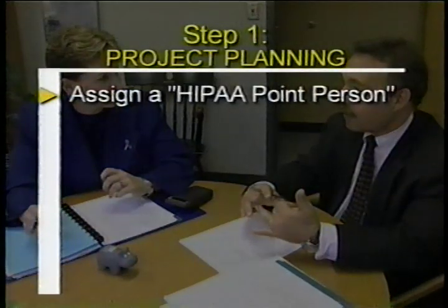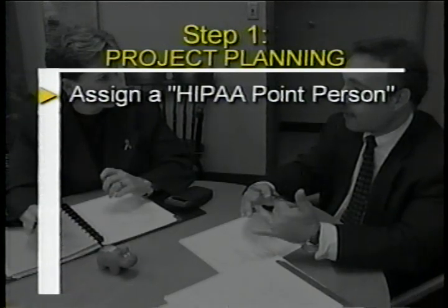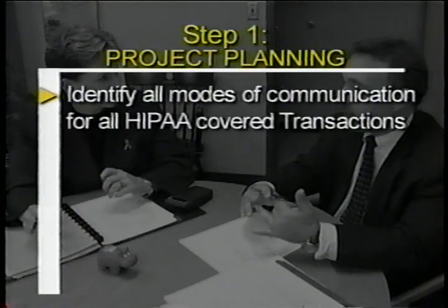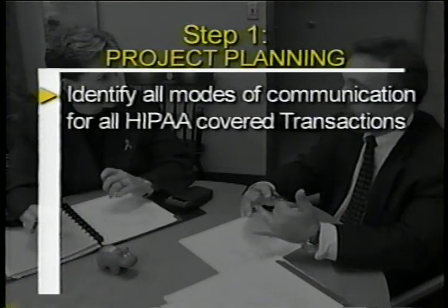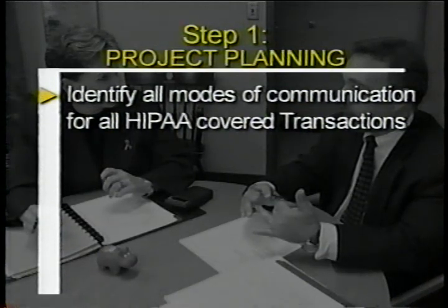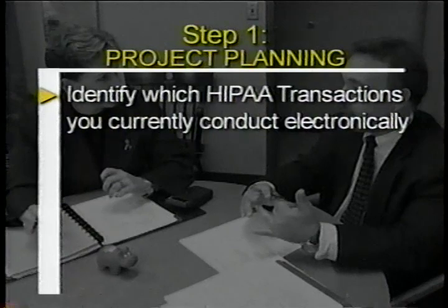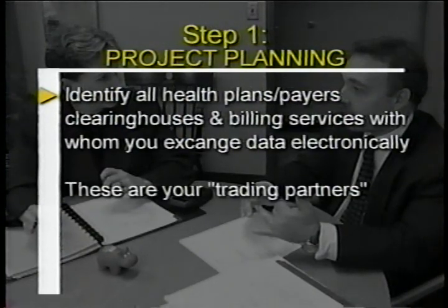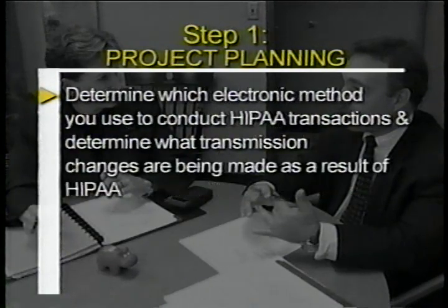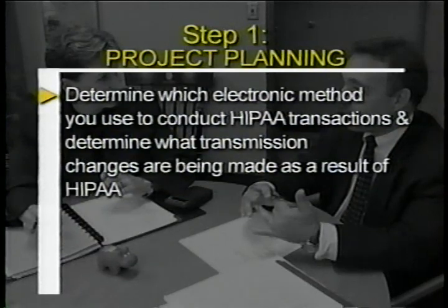The first step is HIPAA project planning. Assign someone in your office as a HIPAA point person responsible for all aspects of HIPAA, with access to decision makers such as the CEO, CFO, and CIO. Identify which modes of communication you use that are covered under HIPAA, such as diskettes, direct data entry (DDE), web-based, or other forms of EDI. Paper, telephone, and faxing with a dedicated fax machine are not considered electronic transactions under HIPAA. Identify all modes of communication, your trading partners, and review your HIPAA budget, resources, and contracts.